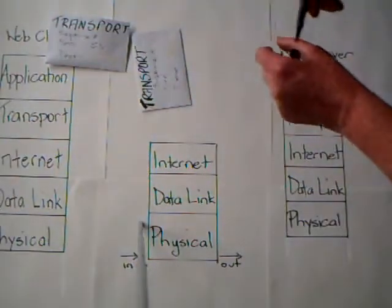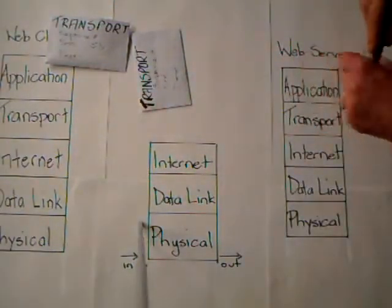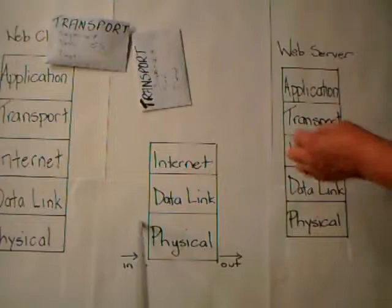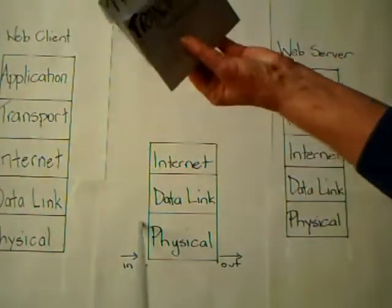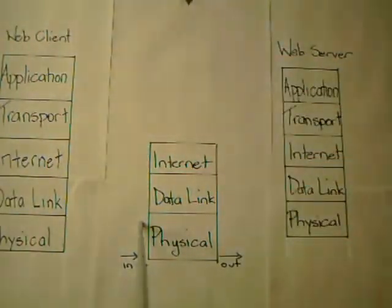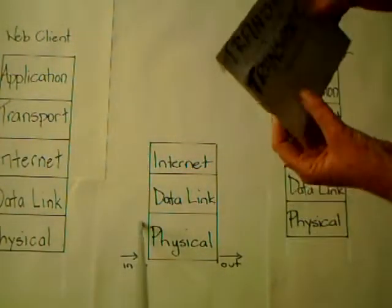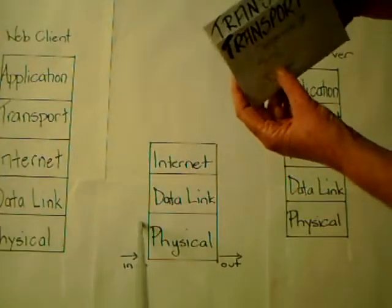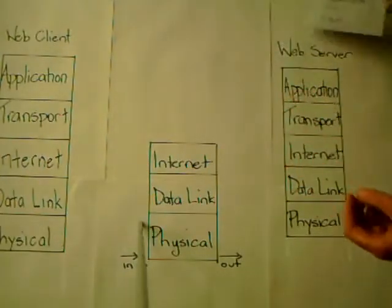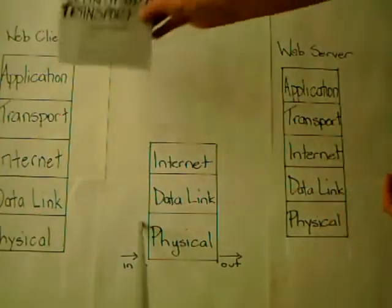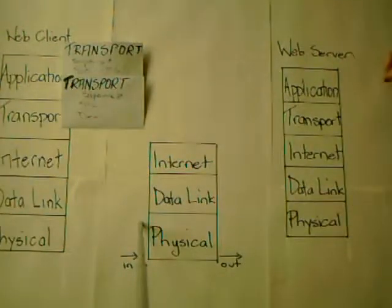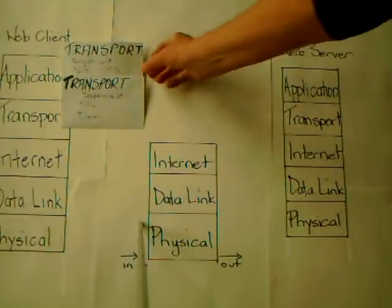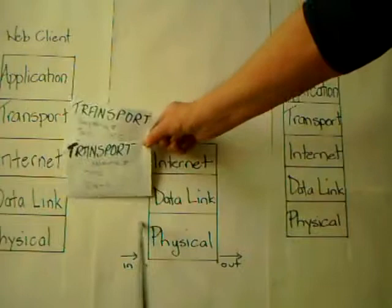For both of these TCP packet segments, the source and destination are going to be the same — the same destination being the web server. Once those protocol data units have been prepared, they're passed on down to the internet layer.